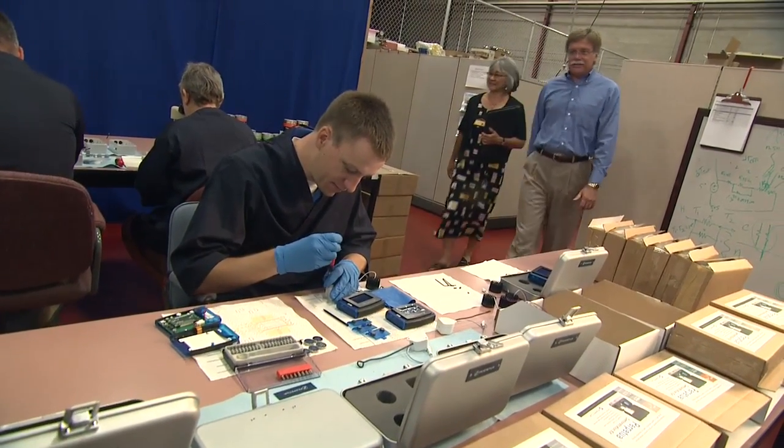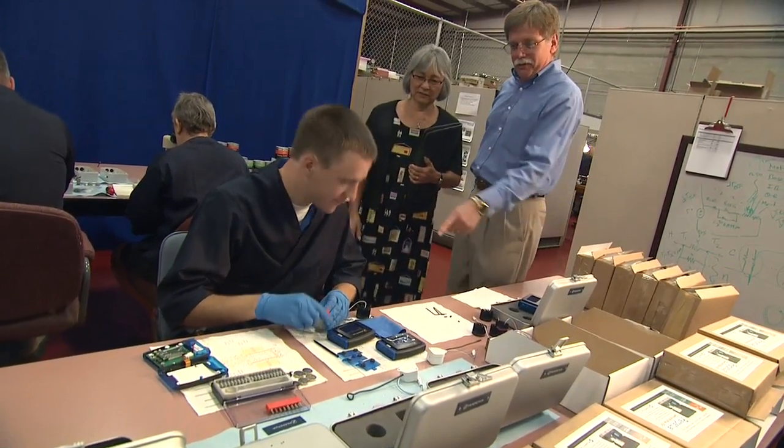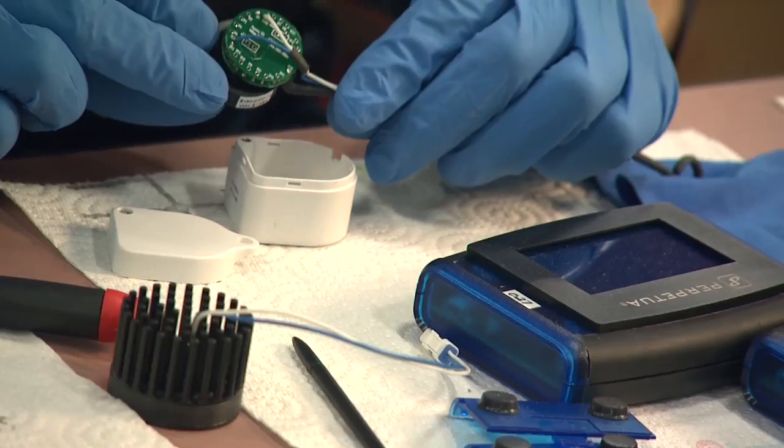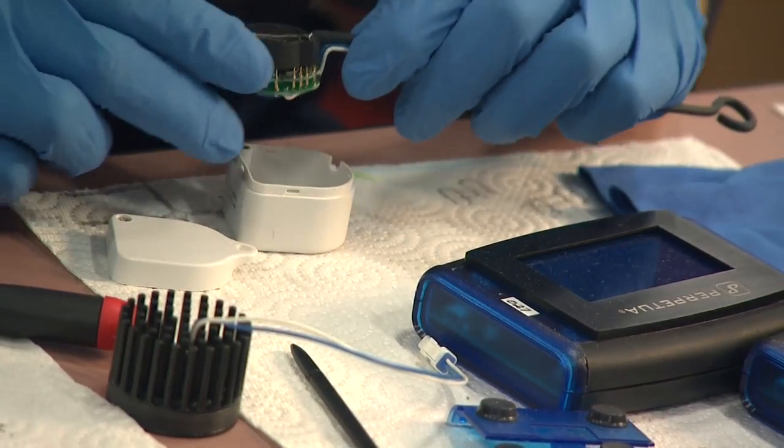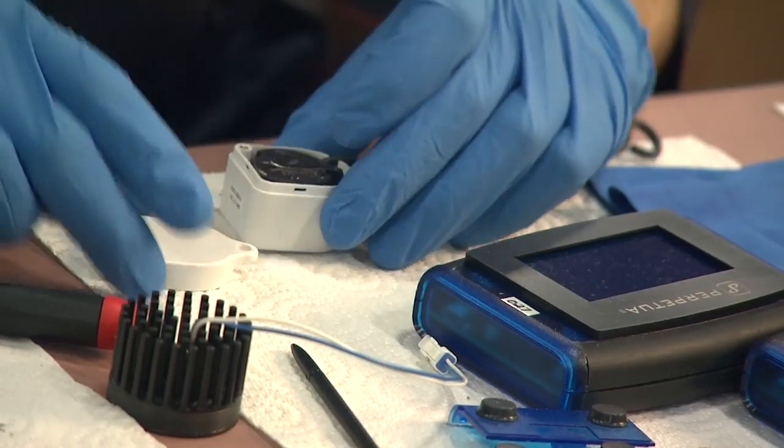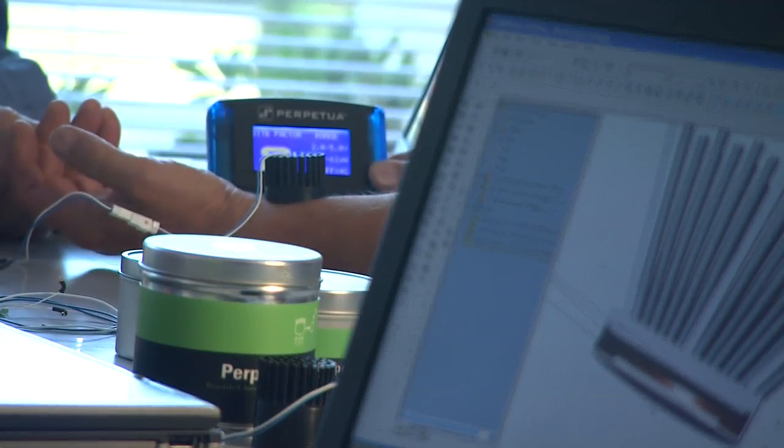Today, Perpetua is focused on incorporating the Power Puck into a variety of systems and applications and relies on thermoelectric expertise at PNNL to refine the product. Through close collaboration, Perpetua is helping end-users reduce their costs associated with battery changes, as well as mobilizing industry towards renewable energy sources, a common mission for PNNL.